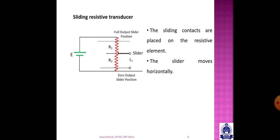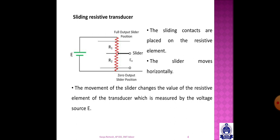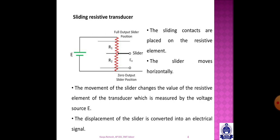This is a sliding contact that moves horizontally. When the slider contact is at one end, the output voltage will be zero and the resistance will be maximum. At the other extreme end, the resistance will be minimum and the output will be maximum. The slider can be placed at any point, and moving the sliding contact varies the resistance, producing a corresponding output voltage. This is the sliding resistive transducer.